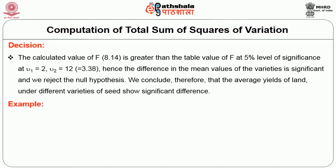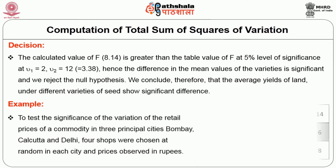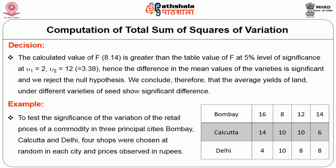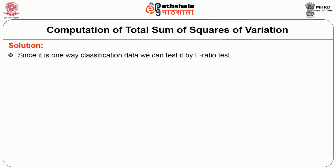Let us consider another example: to test the significance of the variation of the retail prices of a commodity in three principal cities — Bombay, Calcutta, and Delhi — four shops were chosen at random in each city and prices observed in rupees were as follows. Do the data indicate that the prices in the three cities are significantly different? Solution: since it is one-way classification data, we can test it by the F-ratio test.